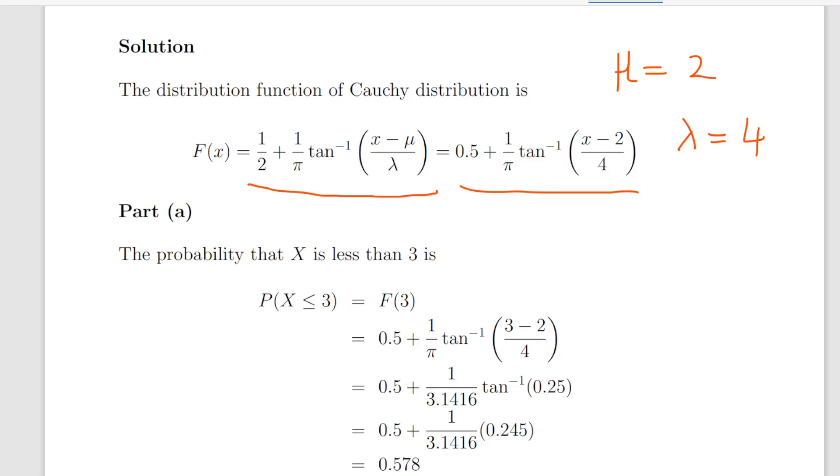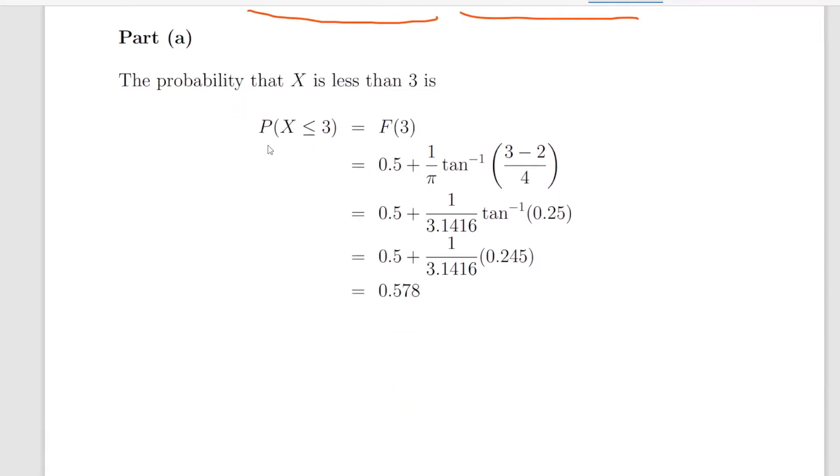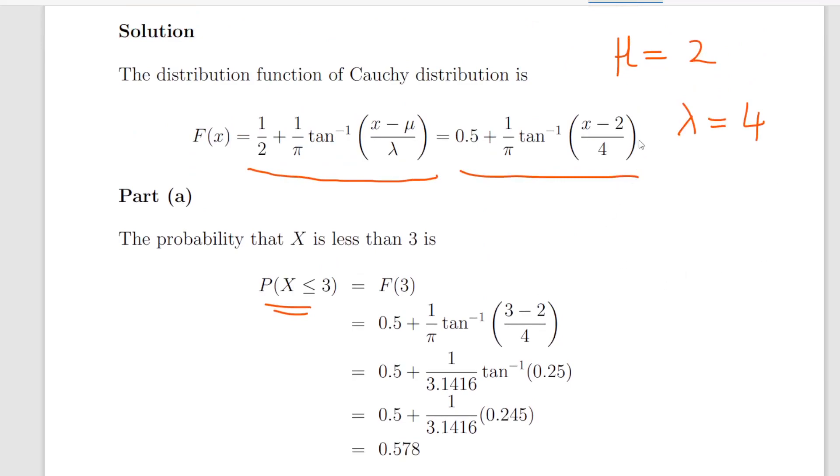Find the probability that X is less than or equal to 3. Well, that is F of 3, and essentially what we do there is let X equal to 3. So here, this key part here, X minus 2 divided by 4, that's 3 minus 2 divided by 4. That's 1 quarter, 0.25. And we get the inverse tan of that.